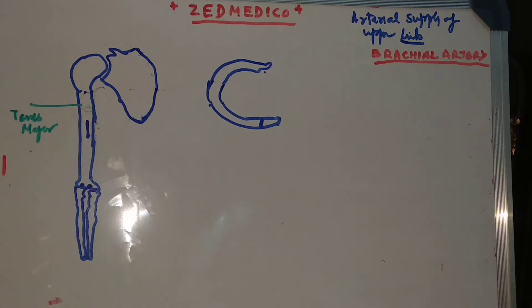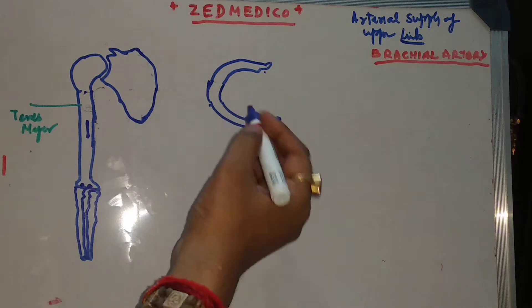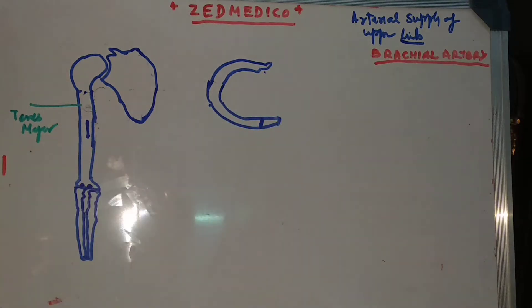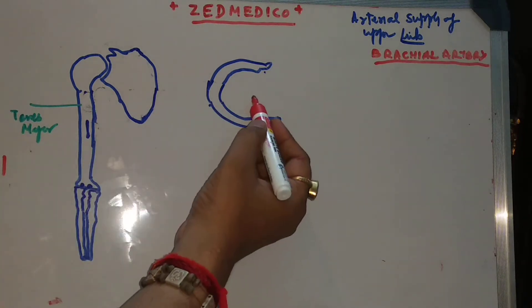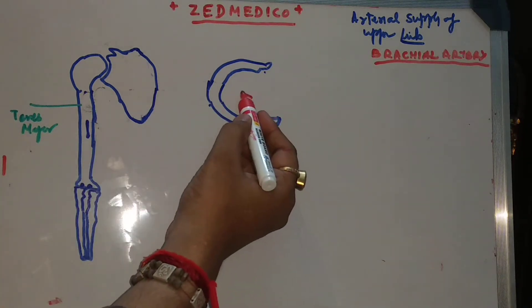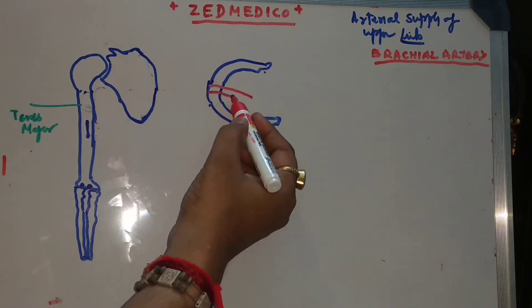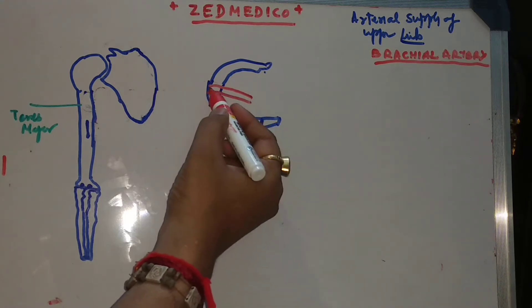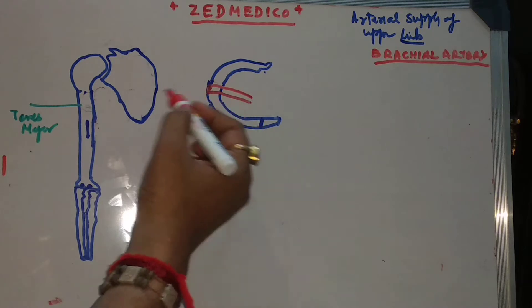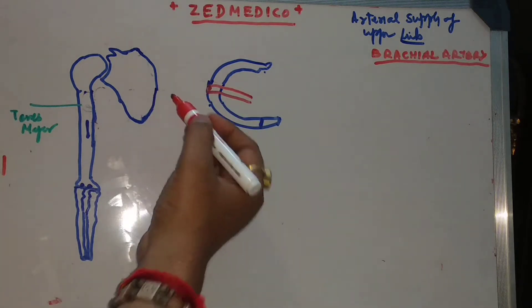Brachial artery is a continuation of axillary artery, and axillary artery is a continuation of subclavian artery. Subclavian artery, when it crosses the lateral border of the first rib at this point, it becomes the axillary artery.